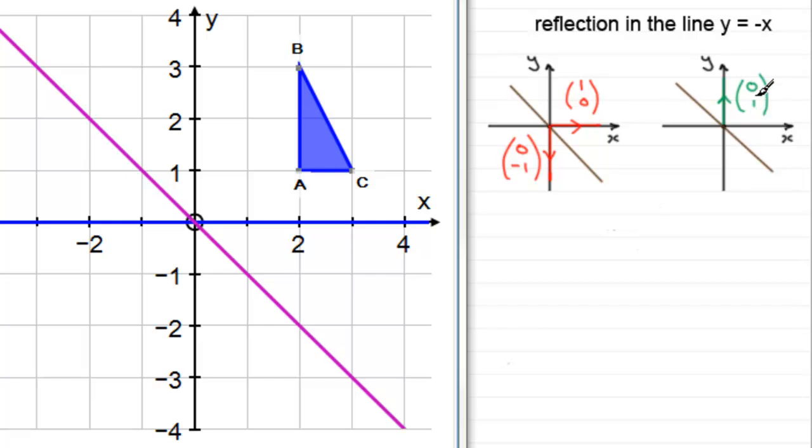And where does the vector zero one go to if we reflect it in y equals minus x? Well it goes to this position, the vector minus one zero.